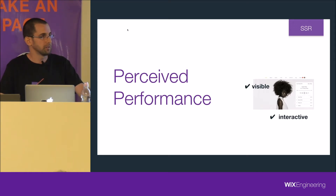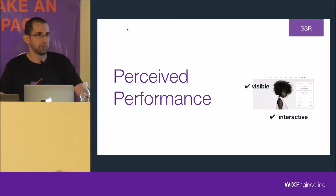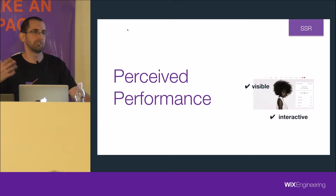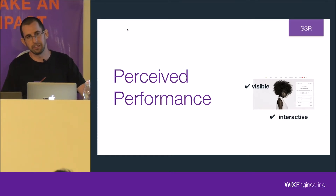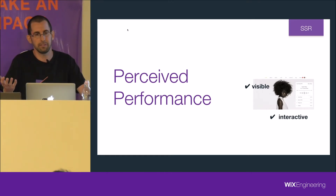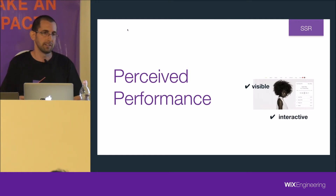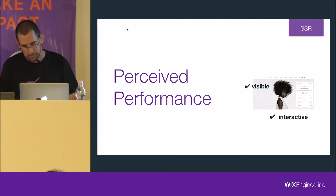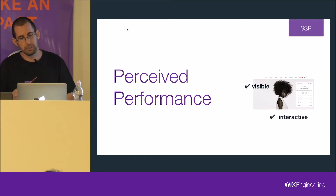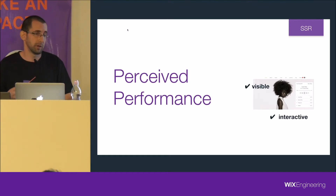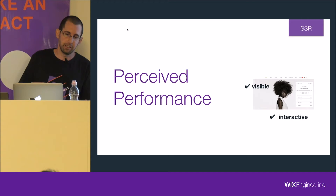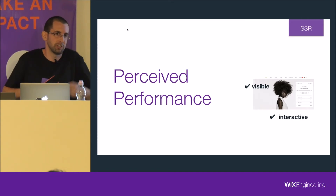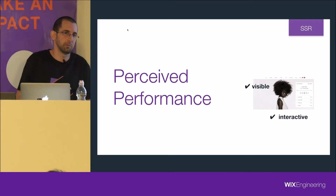SSR is made possible by two things. First, the server doesn't need to download and parse all the JavaScript for each request — we load the server once, load all the code once, and use the same code for all requests, so it's much faster. Second, we can probably render faster on our server, especially faster than mobile devices, so we can generate the HTML much faster than a mobile phone can.